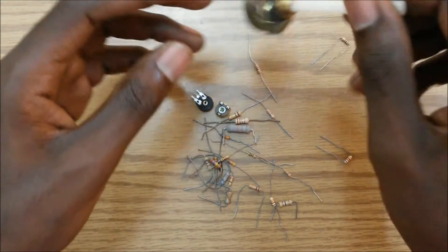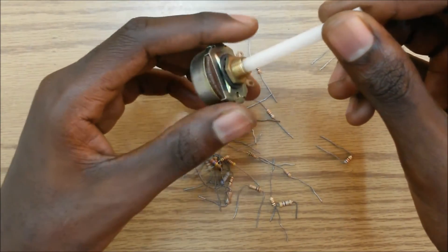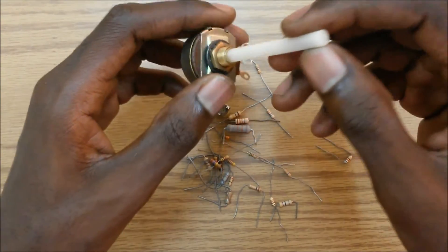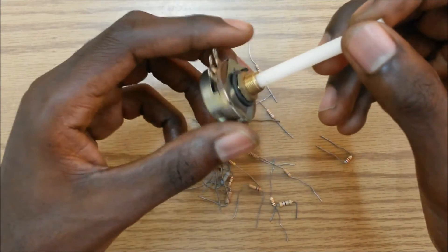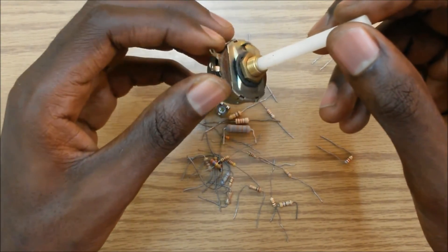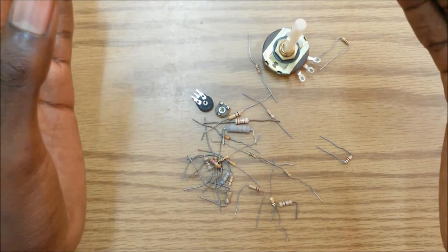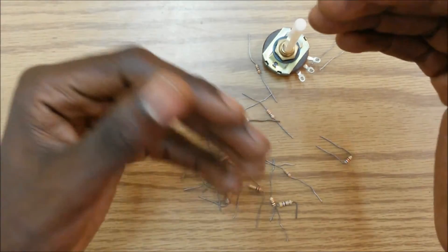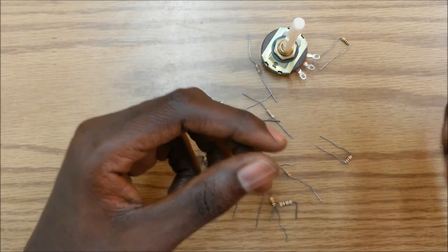Now there are other types of variable resistors. These are some potentiometers. There's also light dependent resistors (LDRs), there's also thermistors which are temperature dependent resistors, and then there are varistors. So those are the two main types of resistors: fixed resistors and variable resistors, and variable resistors are then broken down into other types.